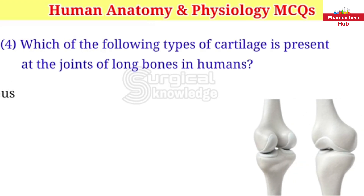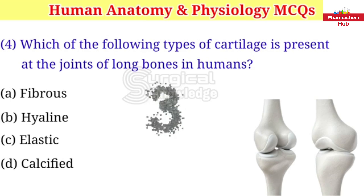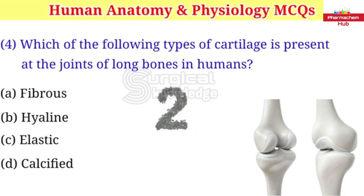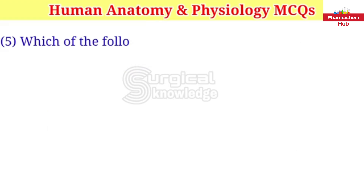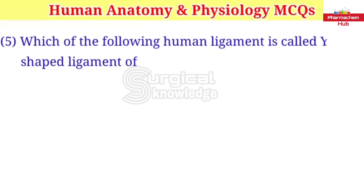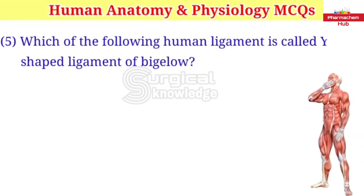Which of the following type of cartilage is present at the joints of long bones in humans? A. Fibrous B. Hyaline C. Elastic D. Calcified. Right answer is hyaline.